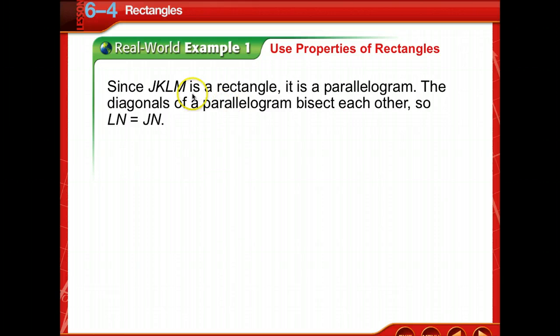Since JKLM is a rectangle, we know it's also a parallelogram. A rectangle has four sides; by definition, a parallelogram has four sides and two sets of opposite sides are parallel. The diagonals of a parallelogram bisect each other, so LN equals JN.